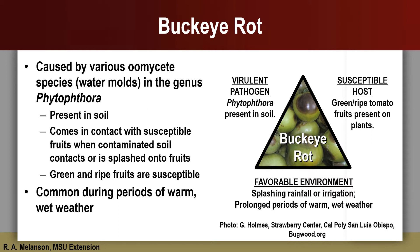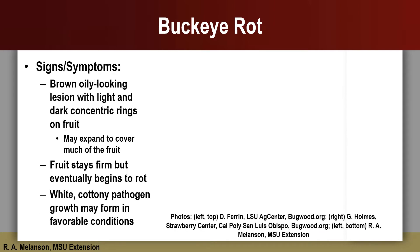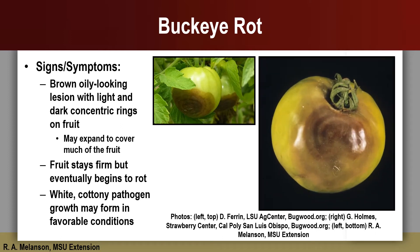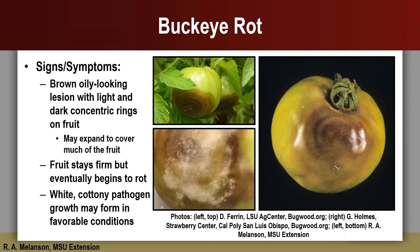Prolonged periods of warm, wet weather support buckeye rot development. Fruits that become infected are often low-hanging and close to the ground, as these fruits are more likely to have soil splashed on them during rains or overhead watering. Buckeye rot lesions are brown and oily looking with alternating light and dark concentric rings. These lesions can expand to cover much of the fruit surface. When favorable conditions are present, white cottony pathogen growth may develop on infected fruit tissues.